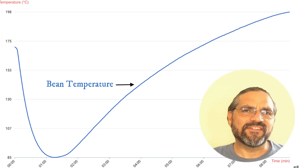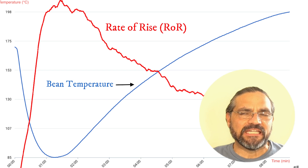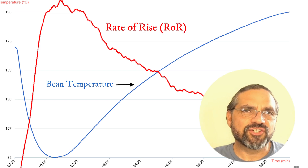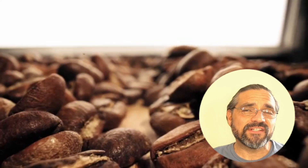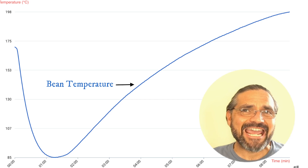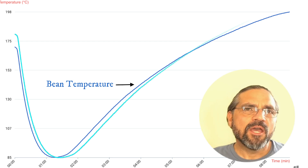I haven't found a simple explanation for rate of rise online, so I decided to make this video with my own. In a nutshell, coffee roasting is about exposing green coffee beans to an increasing temperature for a specific amount of time. The graphical representation of the bean temperature at any given time during the roast is what we call a roasting profile.